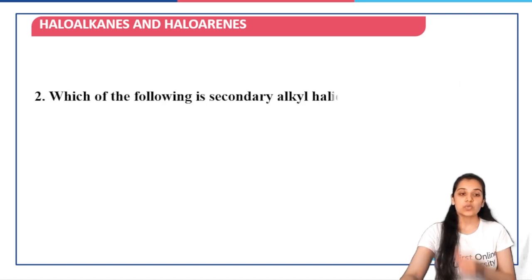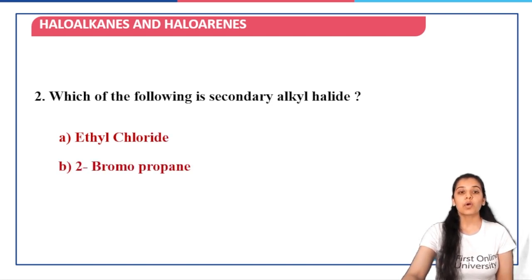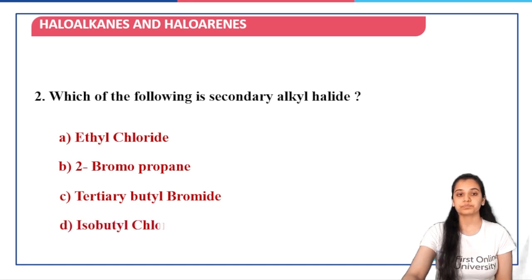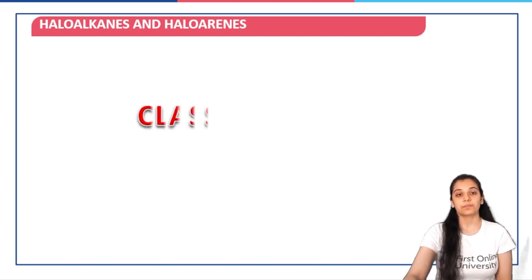The next question is: which of the following is a secondary alkyl halide? Drawing the structures — ethyl chloride is primary; 2-bromopropane is secondary; tertiary butyl, as is clear from the name, is not secondary; and isobutyl chloride is again not secondary. So option B, 2-bromopropane, is the right answer.